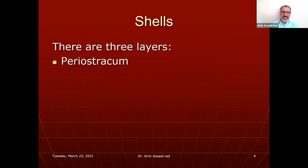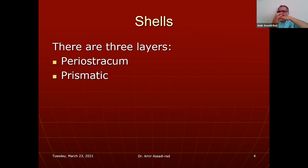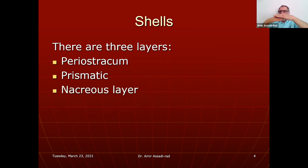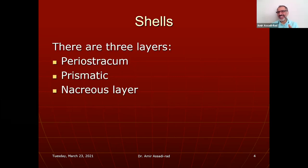There are three layers to the shell. The outermost is the periostracum, made of protein molecules. The next layer is the prismatic layer — very thick and made of calcium carbonate. The innermost layer is the nacreous layer, which is shiny and also made of calcium carbonate.